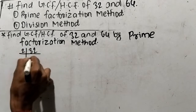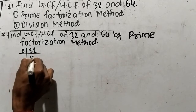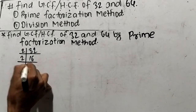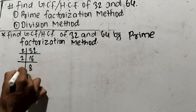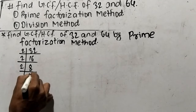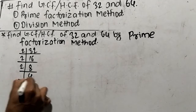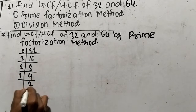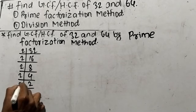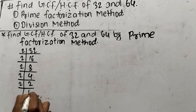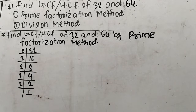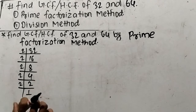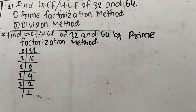So 32 is 2 times 16, and 16 is 2 times 8, and 8 is 2 times 4, and 4 is 2 times 2, and 2 is 2 times 1. So as you look here, we have found out the prime factors of 32.